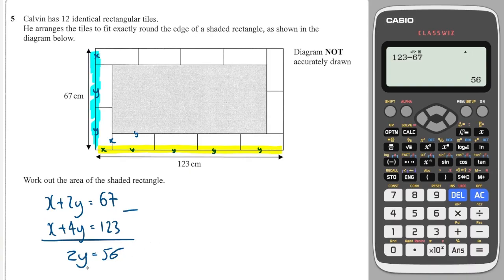So this gives us that the length of the tile is 28. Subbing back into the top equation, I get x plus 2 times 28 is equal to 67. So x will be 67 minus 2 times 28. So 67 minus 2 times 28, and that's 11.